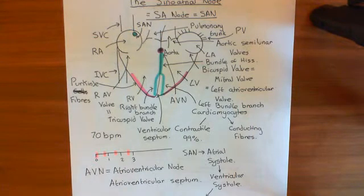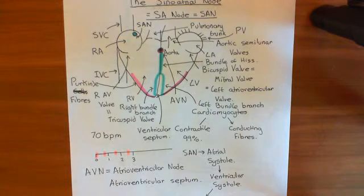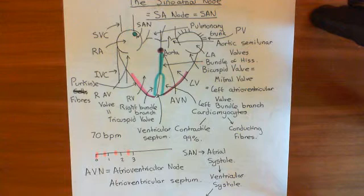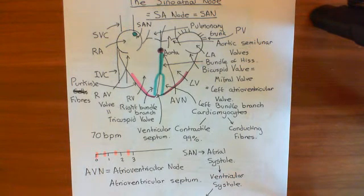That's the function of the sinoatrial node — basically triggering the whole cardiac cycle. It's what sets off the entire process. What we now want to look at is the mechanism by which the sinoatrial node actually generates spontaneous action potentials rhythmically, but we'll do that in the next video.